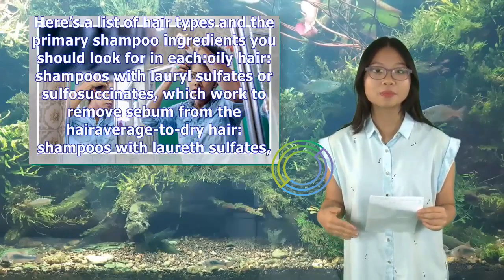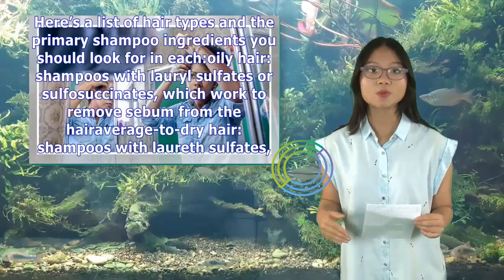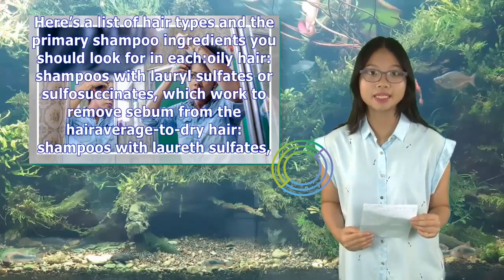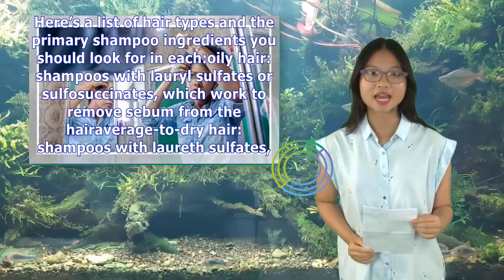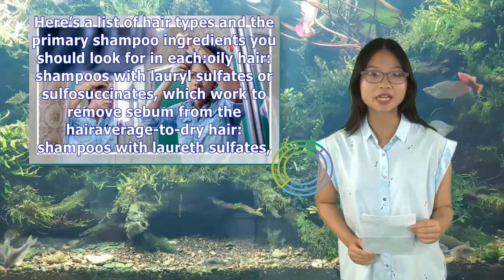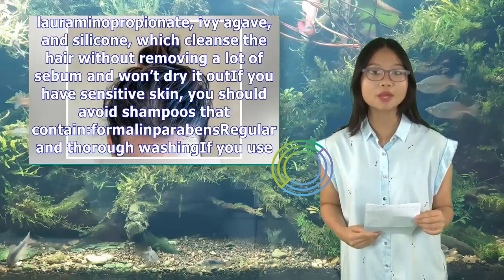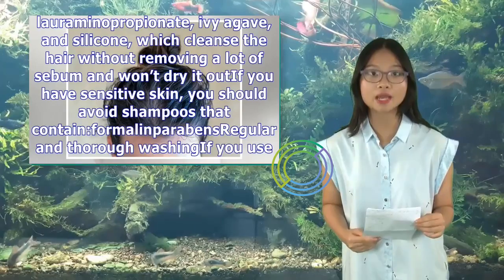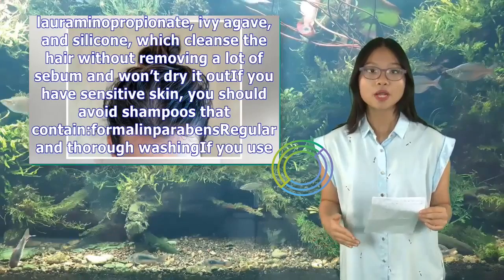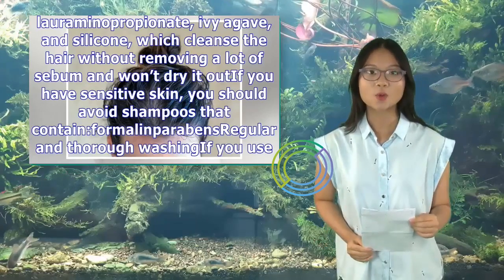Here's a list of hair types and the primary shampoo ingredients to look for: oily hair — shampoos with lauryl sulfates or sulfosuccinates to remove sebum; average to dry hair — shampoos with lauryl sulfates to remove some sebum; dry or damaged hair — shampoos with sarcosines, ammonio esters, alkanolamides, sodium lauroaminopropionate, ivy agave, and silicone, which cleanse without removing too much sebum. If you have sensitive skin, avoid shampoos that contain formalin or parabens.